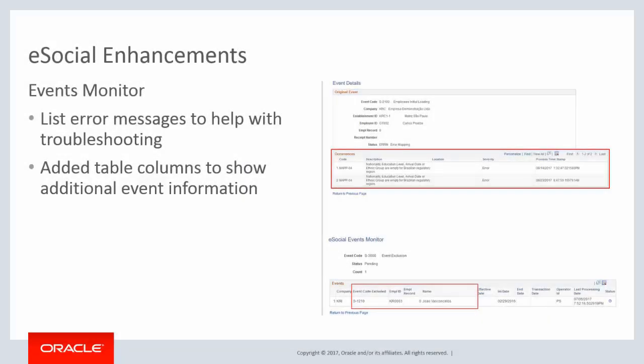In Image 24, several enhancements are delivered to improve the usability of the eSocial Events Monitor. To assist administrators with troubleshooting tasks, the monitor now displays all pertinent error messages in the event details for any event that runs into error during the processing cycle. Also, as administrators review details of exclusion events in the monitor, new columns are added on the Events table to show additional information, such as the events being excluded and their employee names. This completes our discussion of eSocial enhancements.